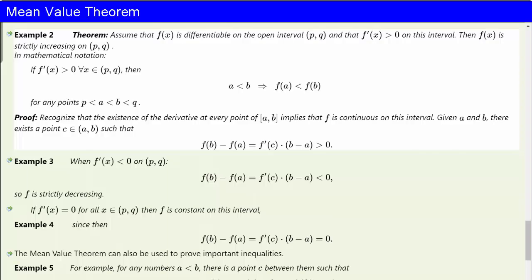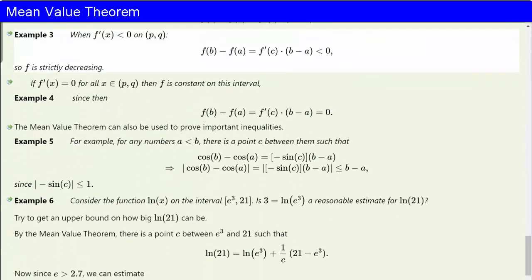We can also prove the symmetric result for the case when f'(x) is less than 0 on an interval (p, q). In that case, f(b) minus f(a) equals f'(c) times (b minus a), but now (b minus a) is positive, f'(c) is negative, the product is negative, so f(b) minus f(a) is negative, and f is strictly decreasing.